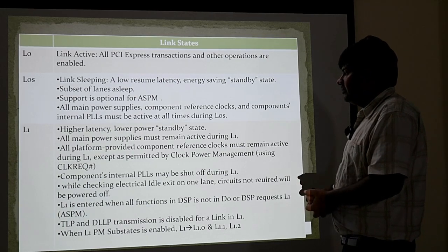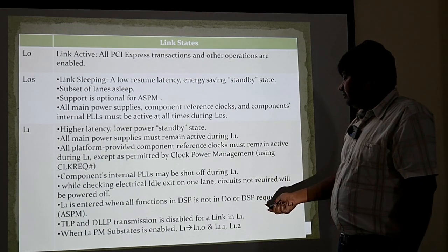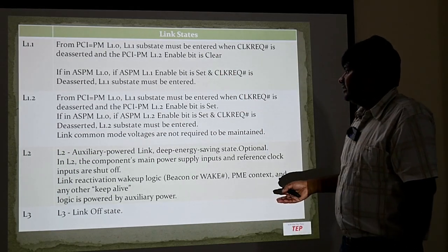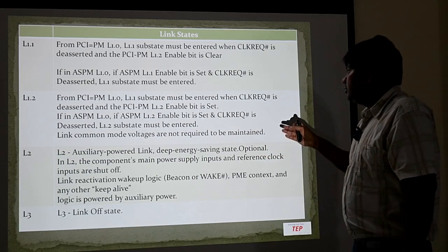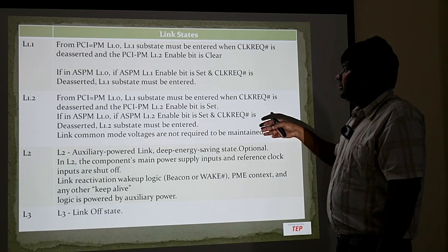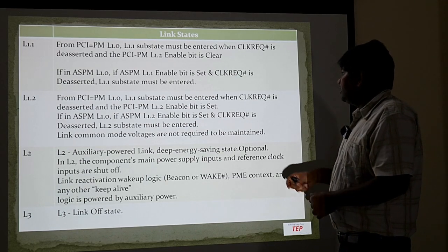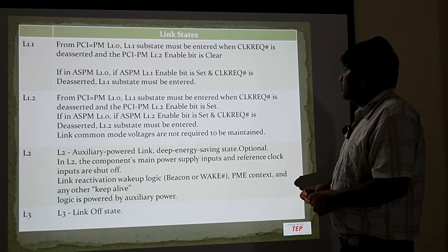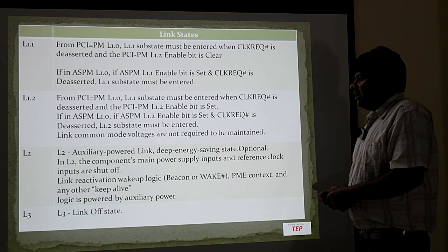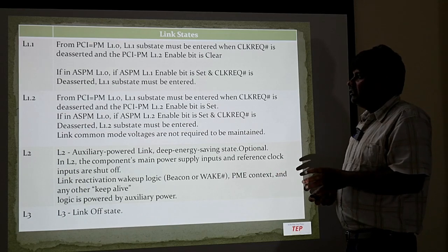When the link is in L1 and sub-states are enabled, there are L1.1 and L1.2 as well. The main difference is that in L1.2, the link's common mode voltages are also not required to be maintained, so deeper power saving happens compared to L1.0. These states are entered based on the CLKREQ signal — its de-assertion and certain enabled bits determine entry into L1.1 and L1.2.